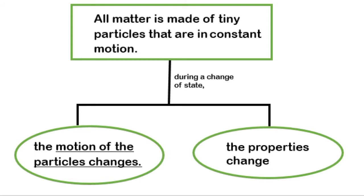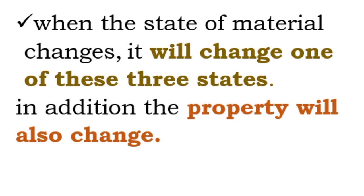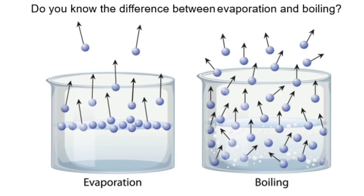All matter is made of tiny particles that are in constant motion. During a change of state, the motion of the particles changes. When a material's condition changes, the properties change as well. However, once the state change reverses, the substance goes back to its original properties.